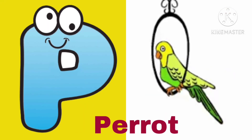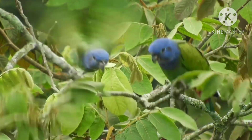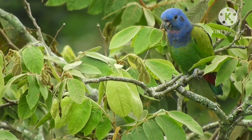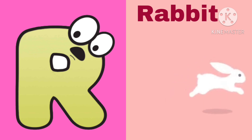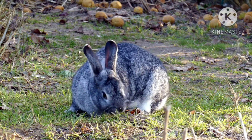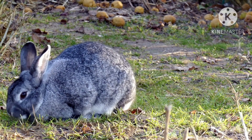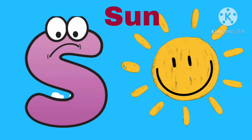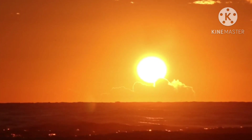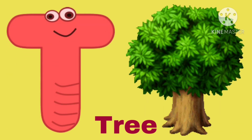P for parrot. Q for queen. R for rabbit. S for sun. T for tree.